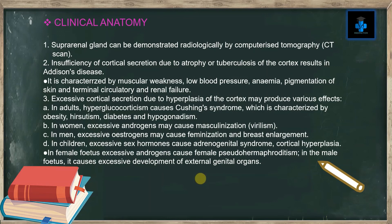Excessive cortical secretion due to hyperplasia of the cortex may produce various effects: (a) In adults, hyperglucocorticism causes Cushing's syndrome, characterized by obesity, hirsutism, diabetes, and hypogonadism. (b) In women, excessive androgens may cause masculinization; in men, excessive estrogens may cause feminization and breast enlargement. (d) In children, excessive sex hormones cause adrenogenital syndrome. Cortical hyperplasia in a female fetus causes female pseudohermaphroditism; in the male fetus it causes excessive development of external genital organs.